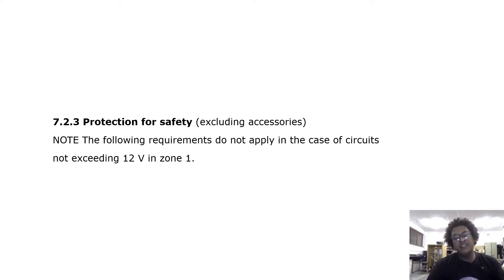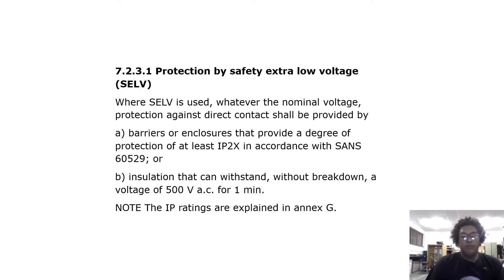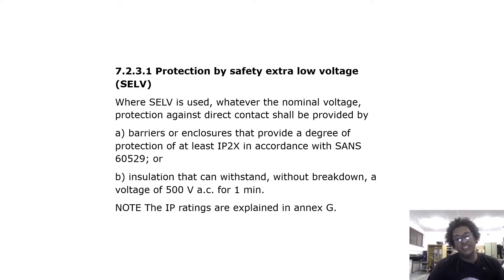Regarding protection for safety — note the following requirements do not apply in the case of circuits not exceeding 12 volts in zone 1. Where safety extra low voltage (SELV) is used, whatever the nominal voltage, protection against direct contact shall be provided by barriers or enclosures that provide a degree of protection of at least IP2X in accordance with SANS 60529, or insulation that can withstand without breakdown a voltage of 500 volts AC for one minute. The IP ratings are explained in Annexure G.